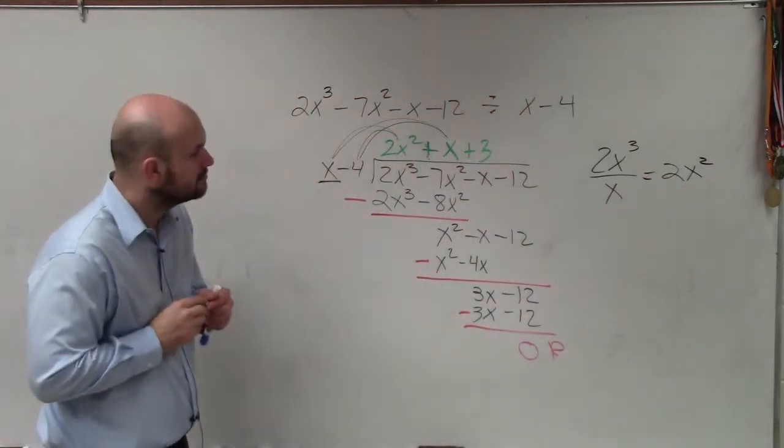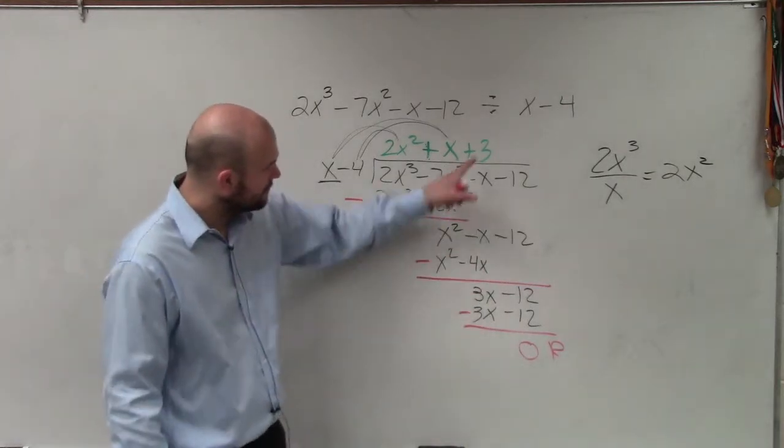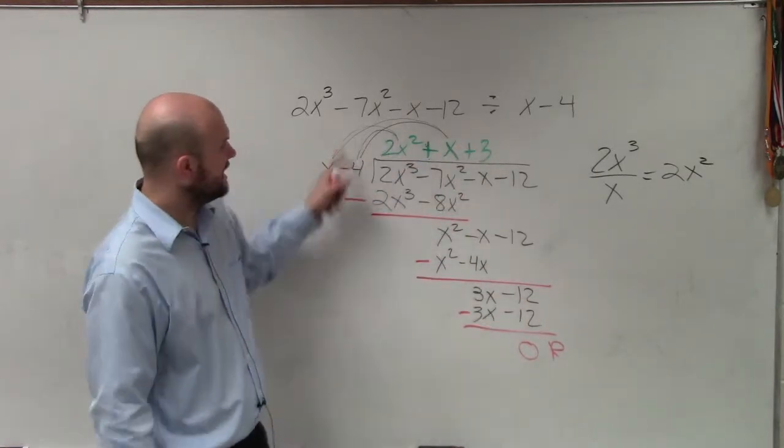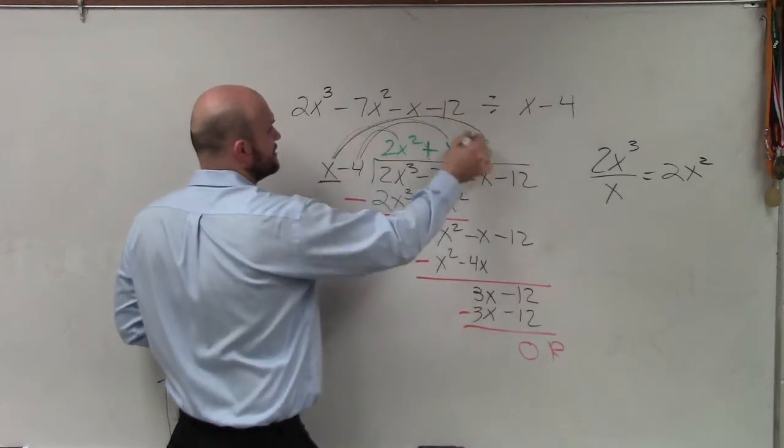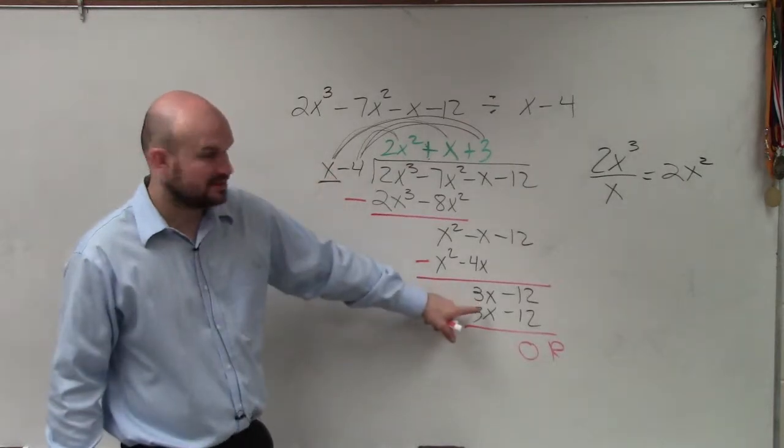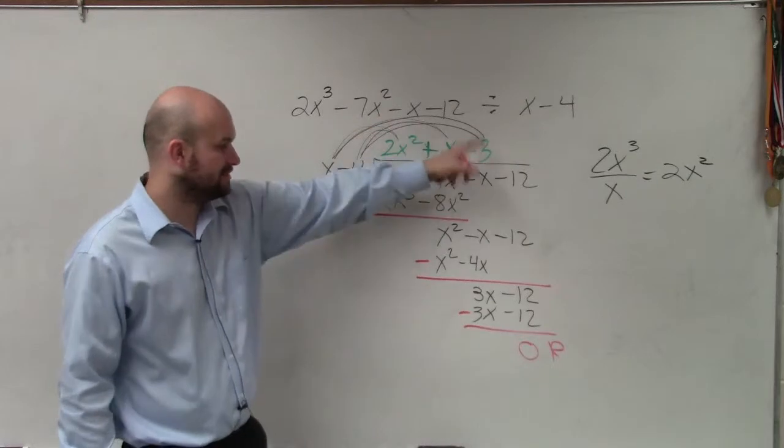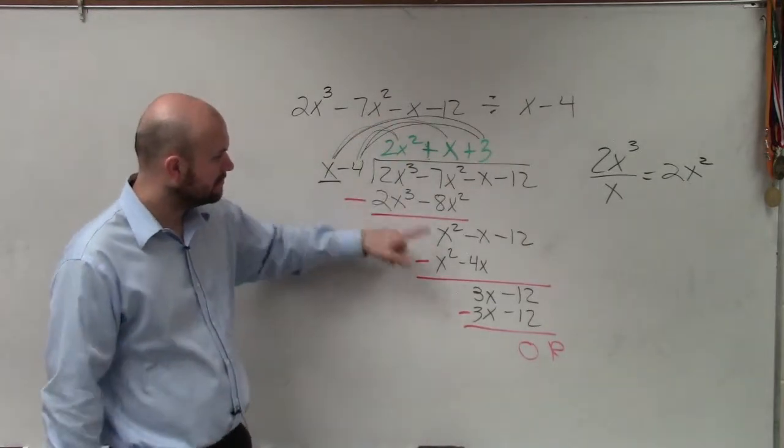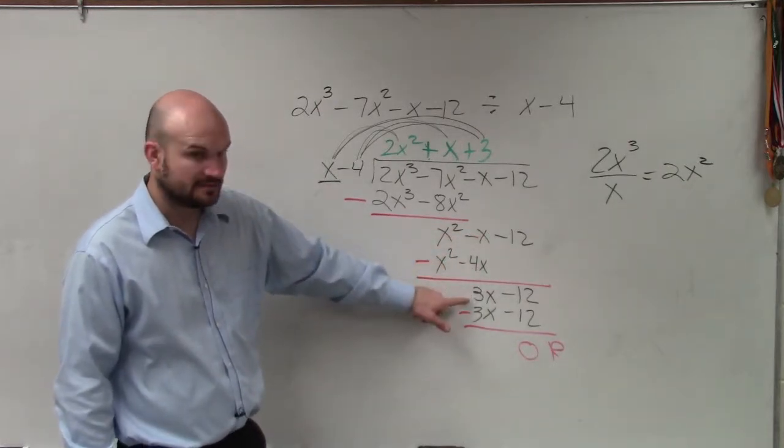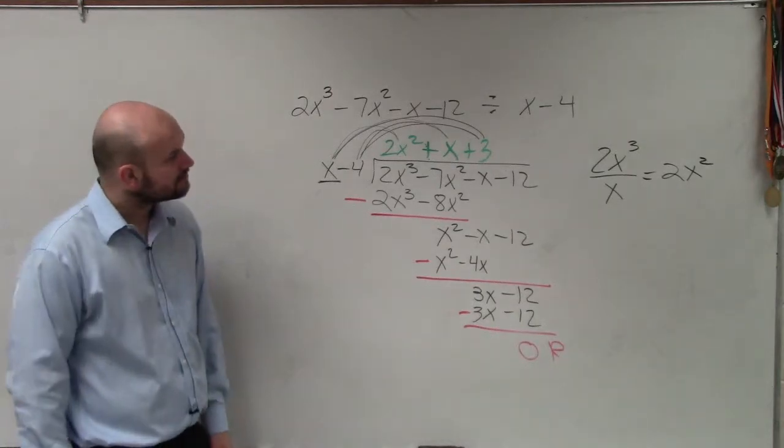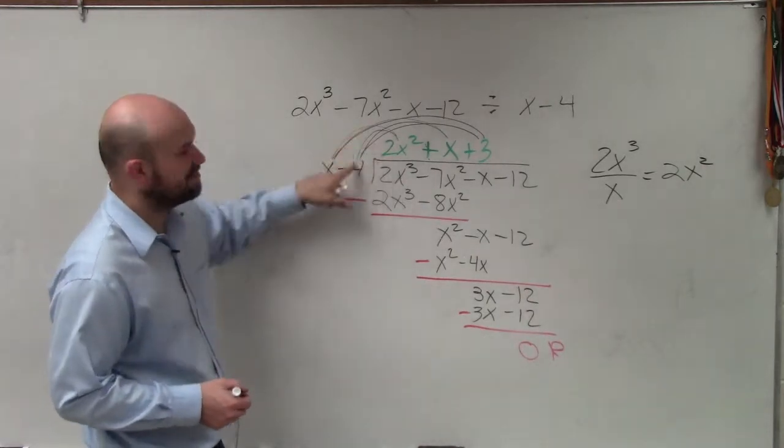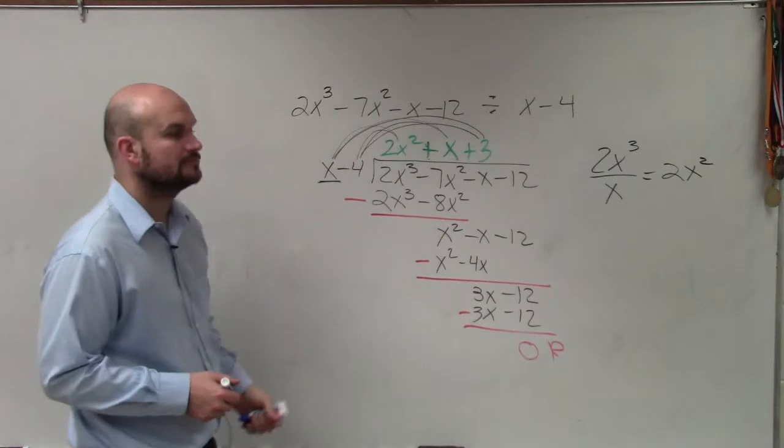Wait, can you redo the last part, like 3x minus 12, but how did you get that? 3 times x is 3x. 3 times negative 4 is negative 12. So you've got to multiply the, ah, I didn't show the arcs, but you've got to multiply 3 times x and you've got to multiply 3 times negative 4. How do you do that at the top, though? Oh, and then that goes down. Right. Right.